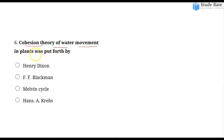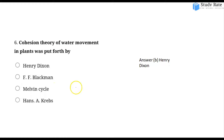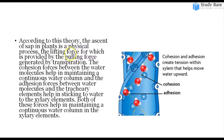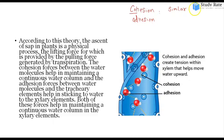The sixth question: The cohesion theory of water movement in plants was put forward by whom? Options include Henry Dickson and FF Blackman, Melvin Calvin, or Hans Krebs. Cohesion involves attachment between similar molecules, while adherence involves attachment between two different molecules.